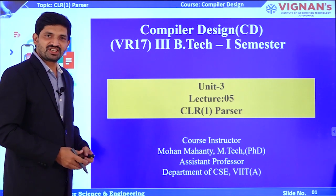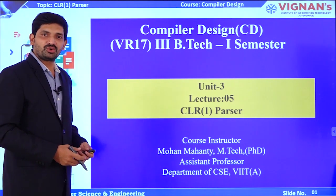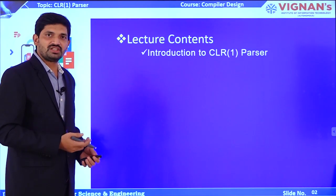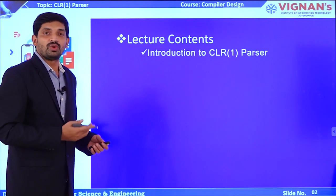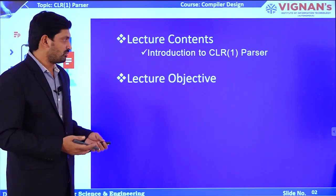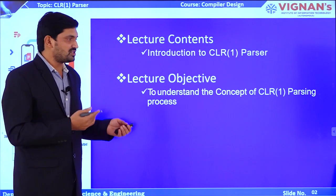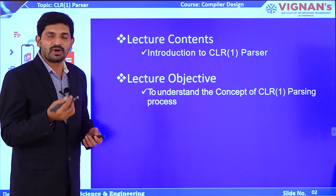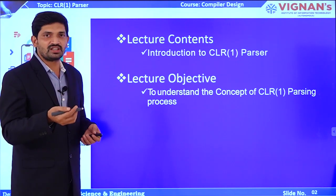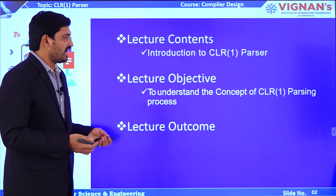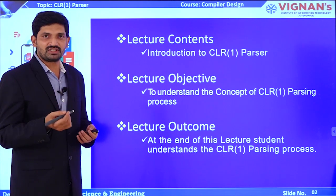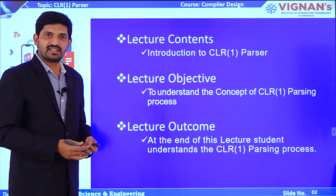Hello students, welcome to this session. In this session, we are going to discuss the CLR 1 parser. We will learn what a CLR 1 parser is and how the parsing process is performed. The objective is how to perform parsing with CLR 1 parser and the difference between LR 0, SLR 1, and CLR 1. After completion, you may learn how to perform parsing if a string is given to the CLR 1 parser.